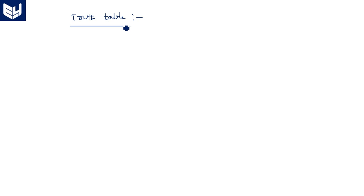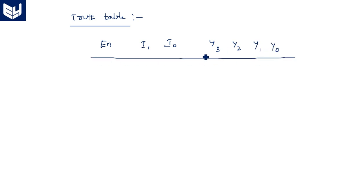Looking at the truth table of the 2-to-4 decoder, we have columns for enable, I1, I0, and outputs Y3, Y2, Y1, Y0. When the enable pin is 0, irrespective of the input state, all outputs are 0 — the chip is in a disabled condition and no operation is performed.